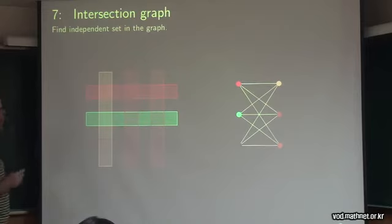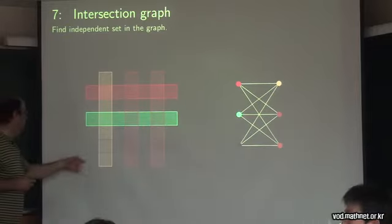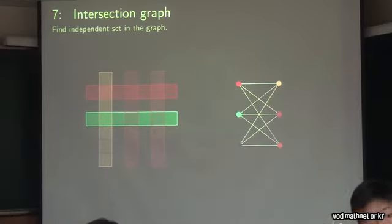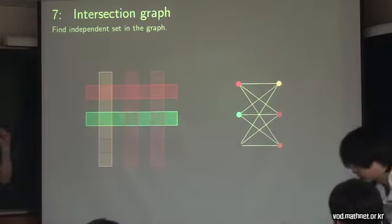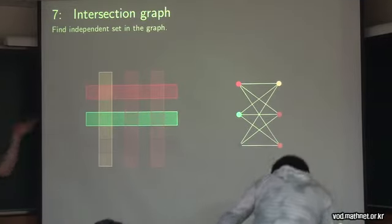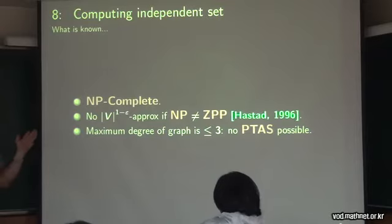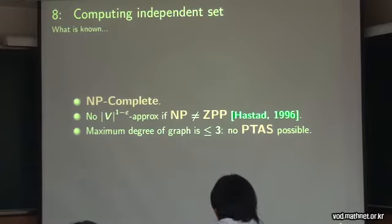So how do we solve this independent set? The regular way to attack this problem is to create an intersection graph where every polygon is a vertex, and you put an edge between two vertices if the two polygons intersect. What you're looking for is an independent set in this intersection graph. Of course, computing an independent set of vertices in a general graph is NP-complete — not only NP-complete, it's monstrously hard to approximate. You cannot approximate it within any polynomial factor unless NP equals ZPP.